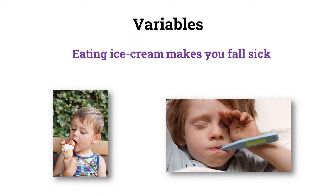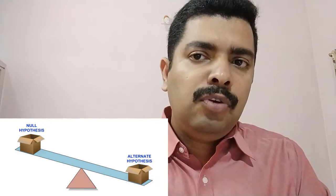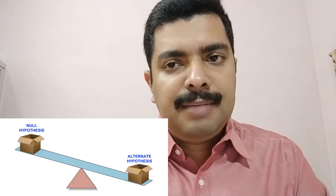Now let's take a very common example which I'll be using throughout in variables as well as in hypothesis webinars. The statement is: eating ice cream makes you fall sick. So this is the statement I am making. There are two types of hypothesis — null hypothesis and alternate hypothesis. Let me explain what null and alternate hypothesis mean using this ice cream example.